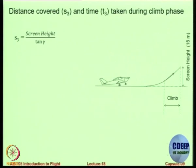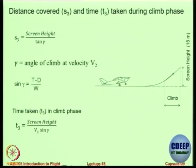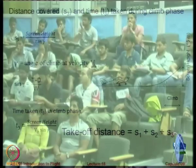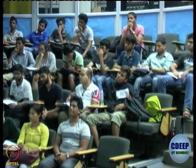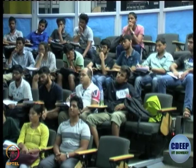During the climb phase, you have a screen height of 15 metres (50 feet) and a climb angle gamma, giving: gamma ≈ (T − D) / W from simple trigonometry. Screen height is defined by the regulatory body — 50 feet for takeoff, 35 feet for landing — and is a fixed number, not a function of the airport. Summing the distances and times for the ground roll, transition, and climb phases gives you the total takeoff distance.